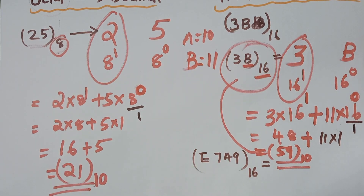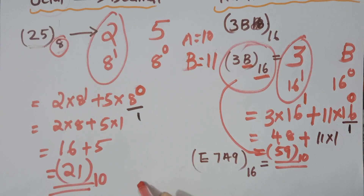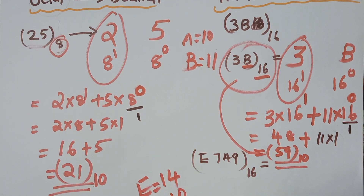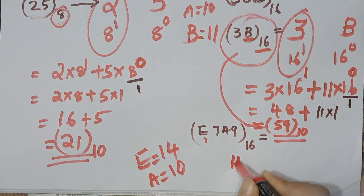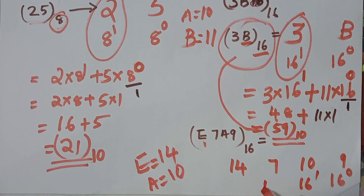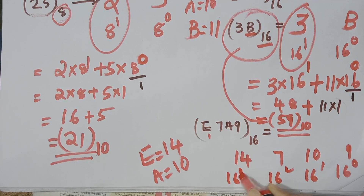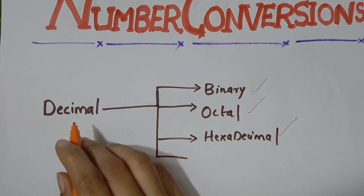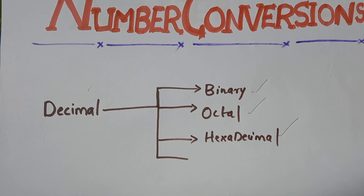Another example: E7A9 in hexadecimal. E is equal to 14. The positional values are 16 raised to 0, 16 raised to 1, 16 raised to 2, and 16 raised to 3. This covers conversion from binary to decimal, octal to decimal, and hexadecimal to decimal.